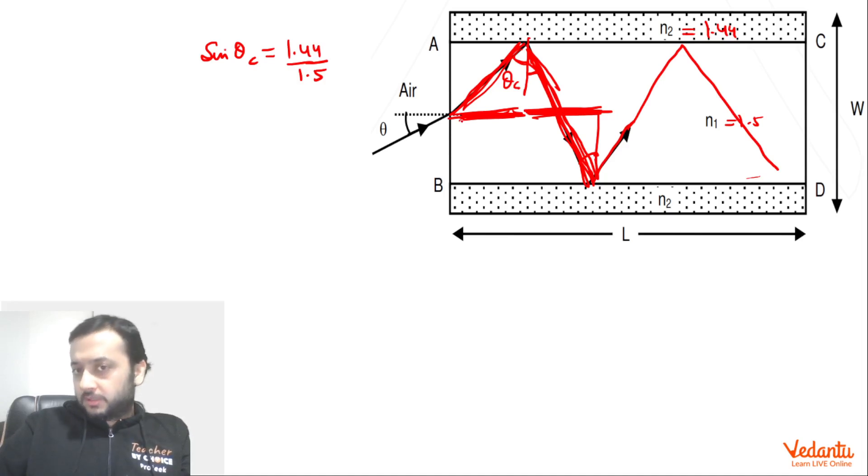So the whole path can be written as L by sin theta c. If you think carefully, this is theta c, this is also theta c. This will also be theta c because the law of reflection will be followed every time, and these will be alternate angles. So we can say that the whole path traveled by the ray will be L by sin theta c.